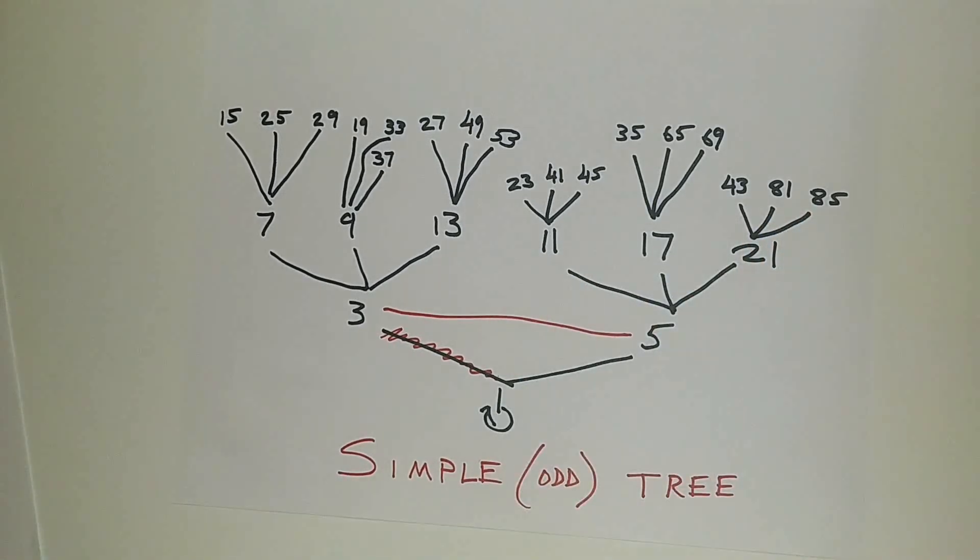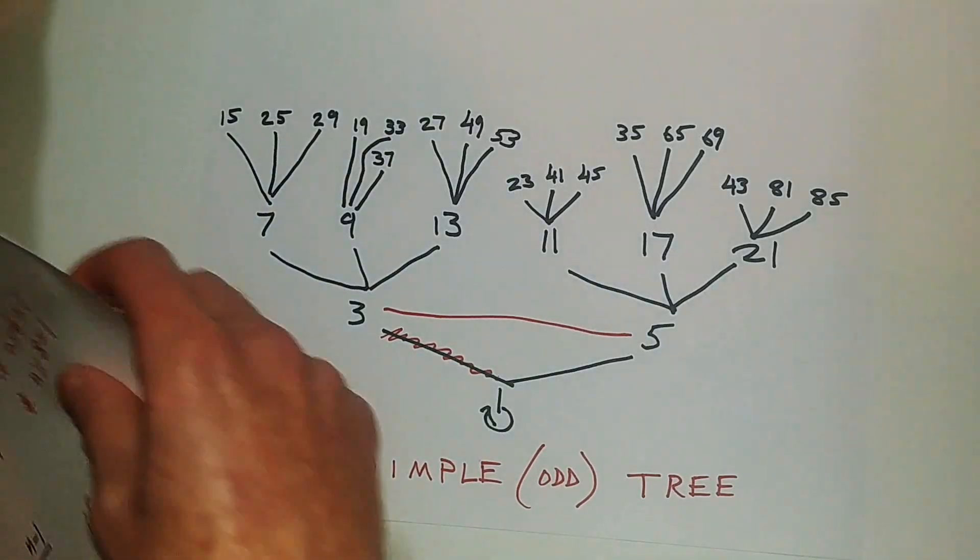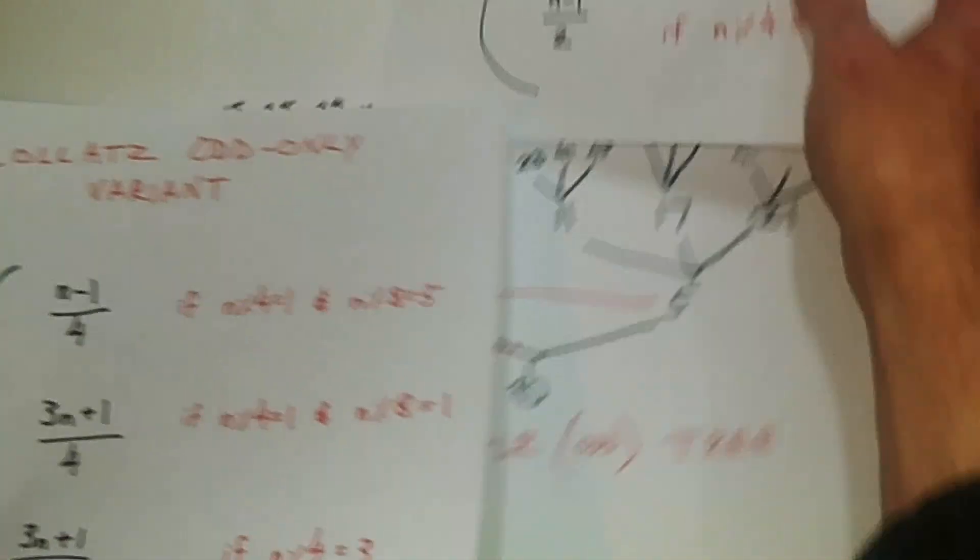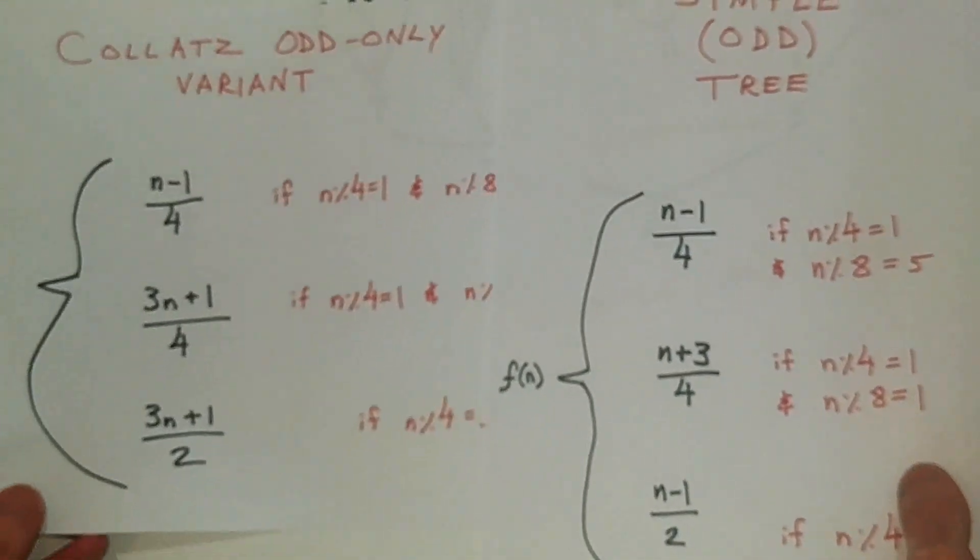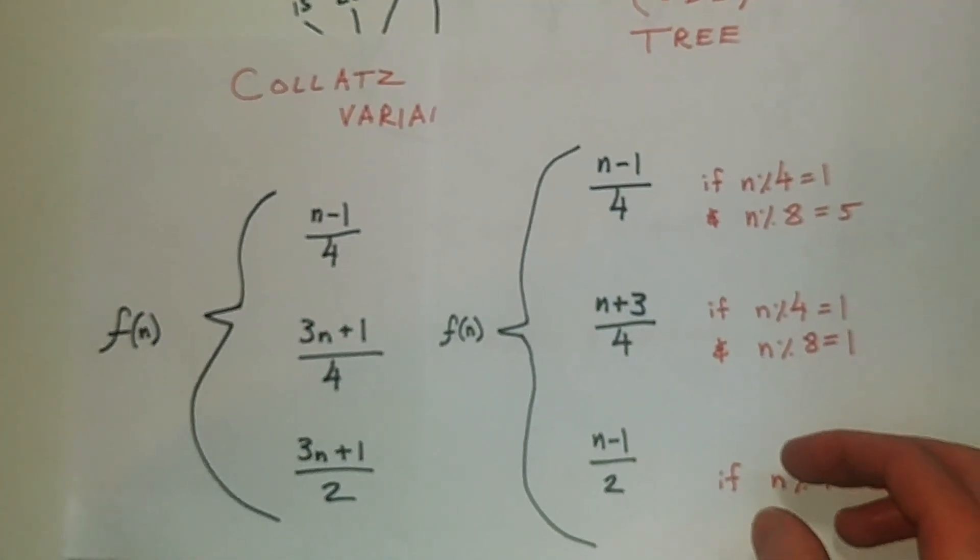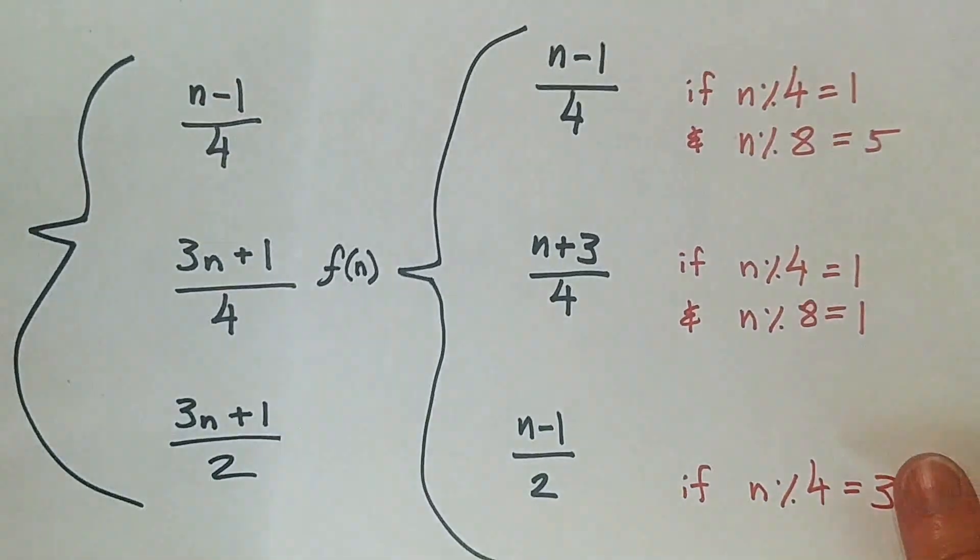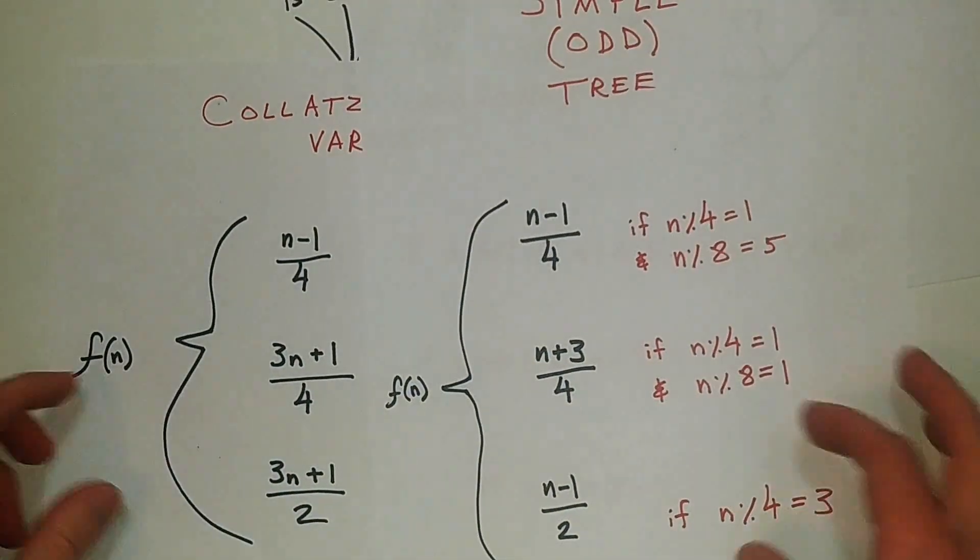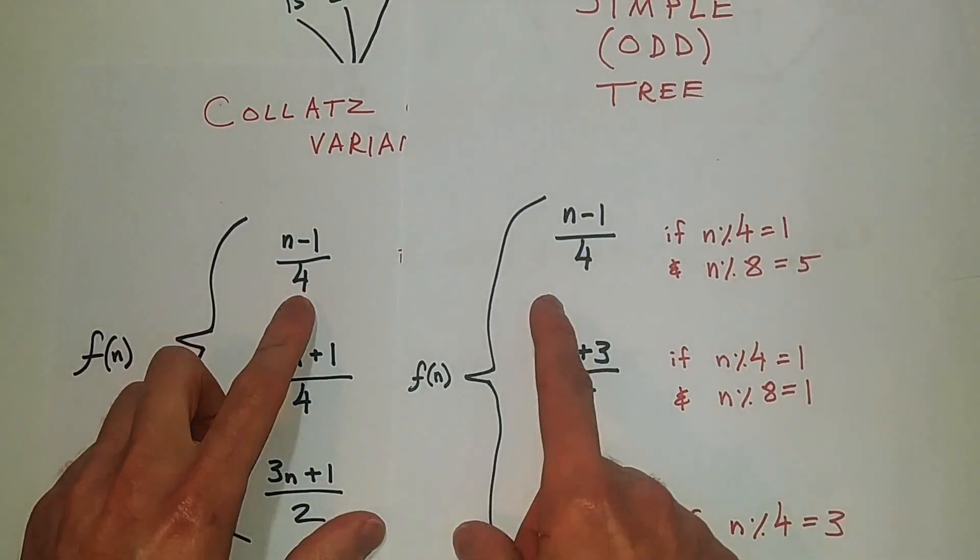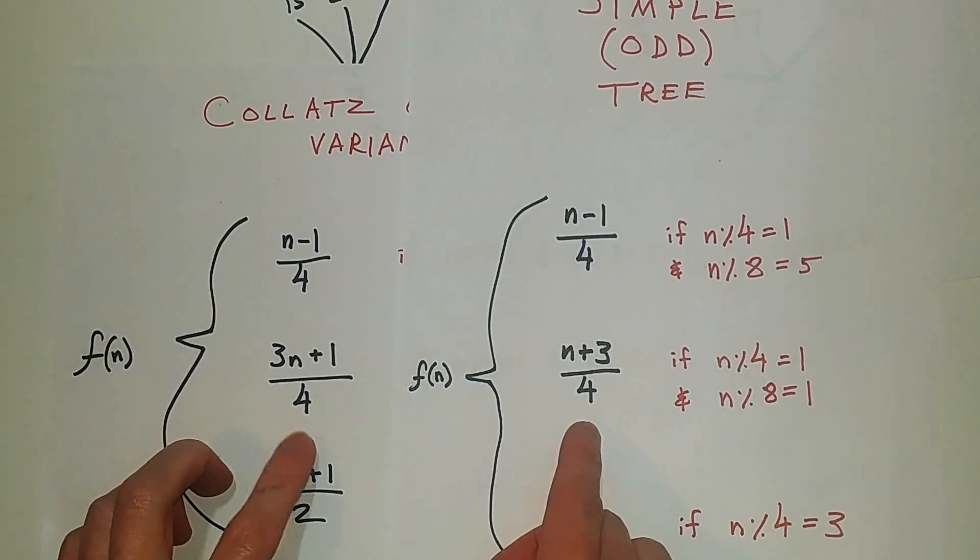So if you look here, creating mess. So we have our simple tree and our Collatz odd-only variant. If I can get this focus to focus again. Focus. Focus.